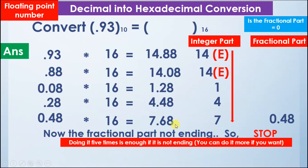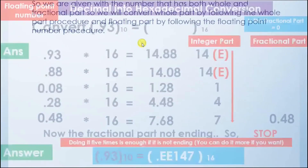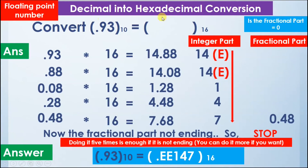We calculate the answer by reading the integer parts from top to bottom. The decimal point maintains its place, and we write the answer as 0.EE147 in hexadecimal. So the number 0.93 in decimal is equal to 0.EE147 in hexadecimal. This is how we convert decimal into hexadecimal using floating-point numbers.